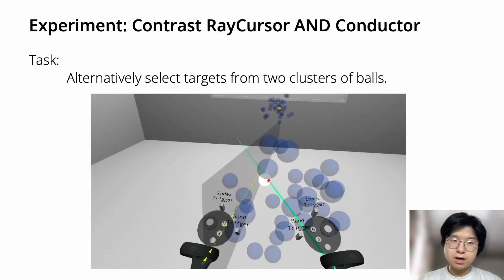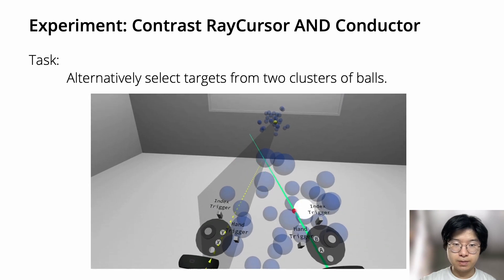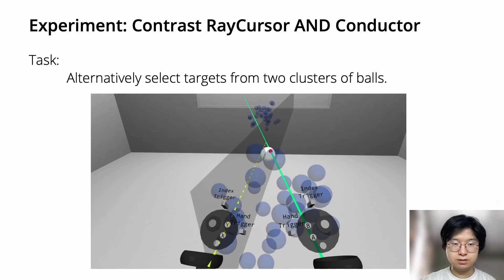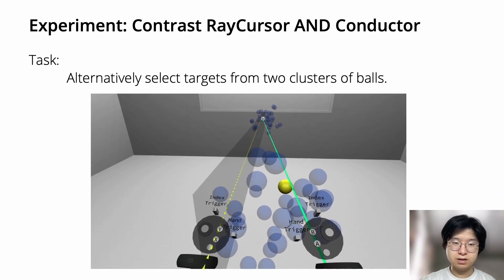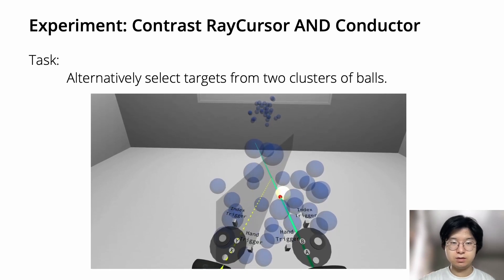Now let's talk about the experiment. The task is to alternatively select targets from two clusters of bots. The technique here is semi-automatic Conductor.